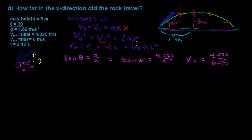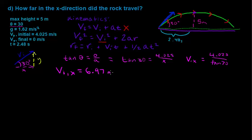Our velocity in the x-direction equals 4.025 divided by tangent of 30. Calculating that, our initial x-direction velocity is equal to 6.97 meters per second.